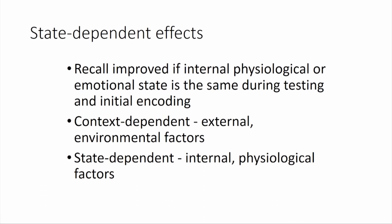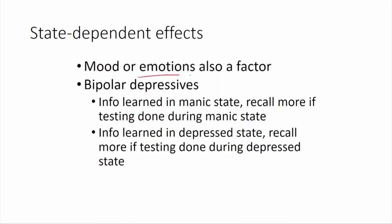Within encoding specificity, you also have state-dependent features: improved recall related to internal physiology or emotional state. Context-dependent effect depends on environmental factors, while state-dependent effect depends on internal physiology. What your body physiology is when you are recalling something has a lot to say about how recall progresses. Moods or emotions matter — if you are feeling negative when learning a list and are still feeling that negativity when retrieving, recall is better. People who learn under a certain mood retrieve better when in that same mood.